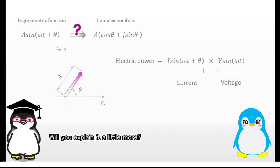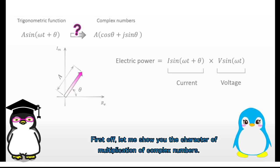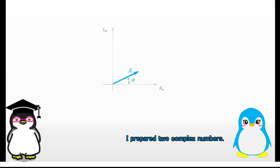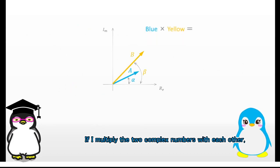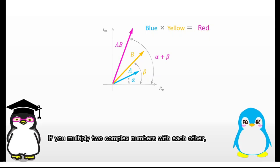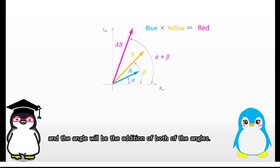Will you explain it a little more? Sure. First off, let me show you the character of multiplication of complex numbers. I prepared two complex numbers. If I multiply the two complex numbers with each other, the answer will be this red complex number. If you multiply two complex numbers, the length of the result will be the multiplication of both lengths, and the angle will be the addition of both angles.